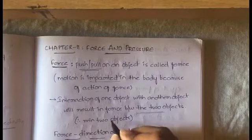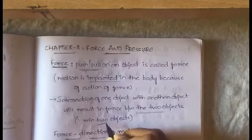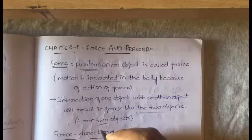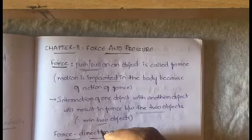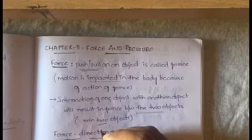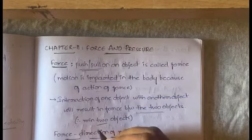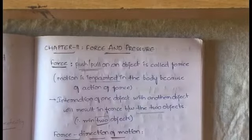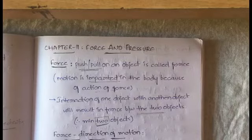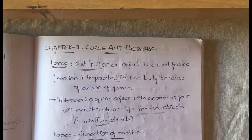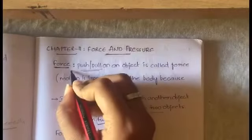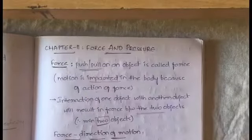In order to develop force, we need a minimum of two bodies. Force cannot be applied on only one body. The two bodies can be anything — two human beings, two objects, or one human being and one thing. We require at least two objects in order to generate force between them.